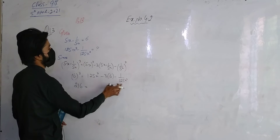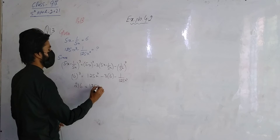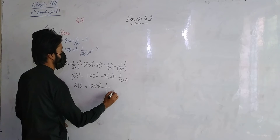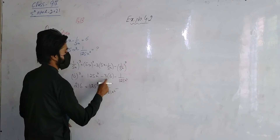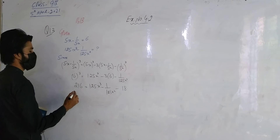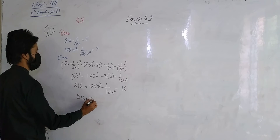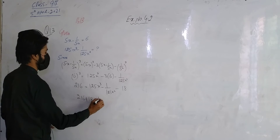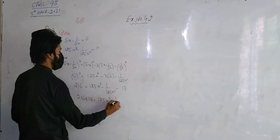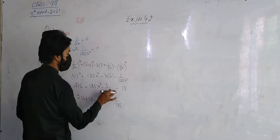We find values that we have combined. Cube minus 1 over 1, 25 x cube minus 6. 3 is our 18, so 18 to move — this will be 1. 6 plus 18 is equal to 1, 25 x cube minus 1 over 1, 25 x cube.